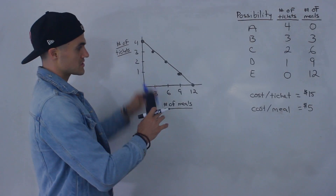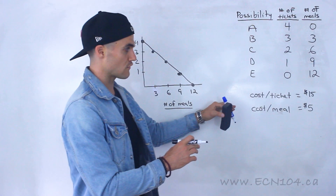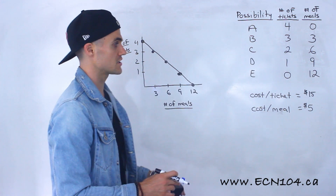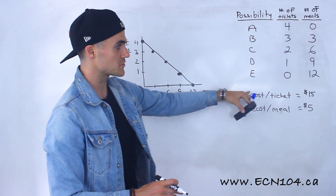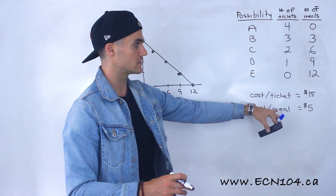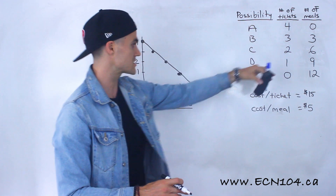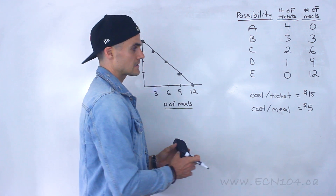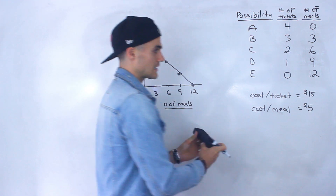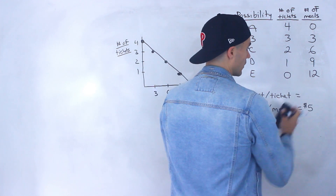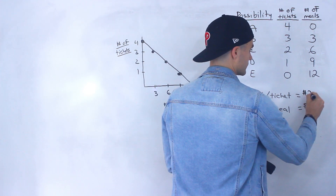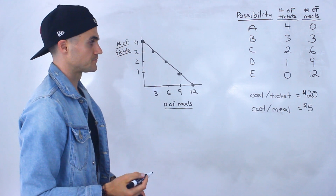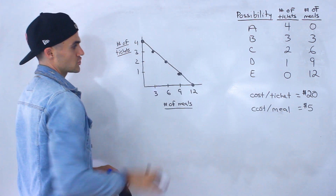Let's talk about how this budget line is going to change if we change the cost of these goods. We have the cost per ticket at $15, cost per meal at $5. We have the possibility table and the budget line. Let's pretend that the cost per ticket is going to go up to $20. How is that going to change things? How is that going to affect the budget line?